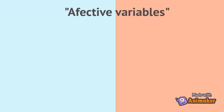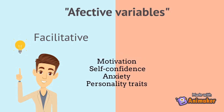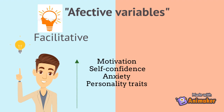The affective filter hypothesis says that a number of affective variables play a facilitative, but not causal, role in second language acquisition. These variables include motivation, self-confidence, anxiety, and personal traits. Krashen claims that learners with high motivation, self-confidence, a low level of anxiety, and extroversion are better equipped for success in second language acquisition.